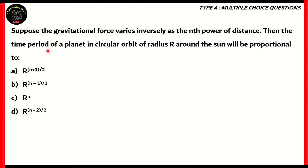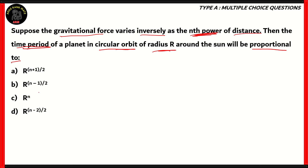Suppose the gravitational force varies inversely as the nth power of distance, then the time period of a planet in circular orbit of radius r around the sun will be proportional to: r raised to n plus 1 over 2, r raised to n minus 1 over 2, r raised to n, or r raised to n minus 2 over 2.